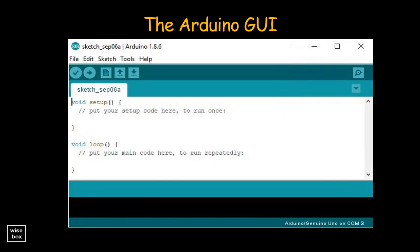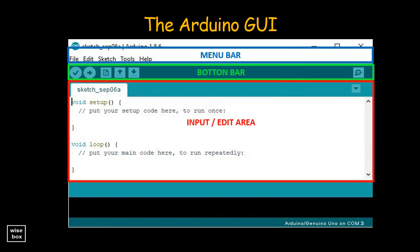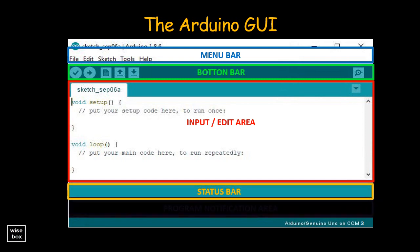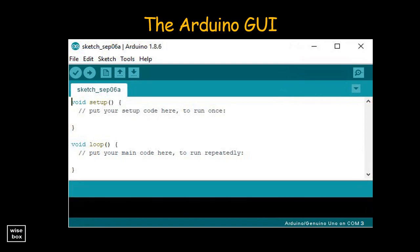The Arduino IDE is quite user-friendly. You have the menu bar, button bar, the white input or edit area, the status bar, and the program notification area. Here are the frequently used commands: Verify — this compiles and approves your code and will catch errors in syntax. Upload — this sends your code to the Arduino board, and when you click it you should see lights on your board blink rapidly.